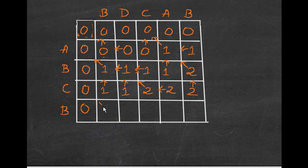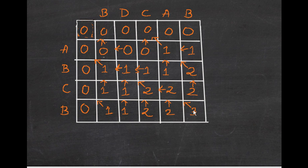B and B match — increment 0 by 1, we get 1. B and D do not match — take the maximum, 1. B and C do not match — take the maximum, 1 then 2. A and B do not match — take the maximum, 2. B and B match — increment the number at this cell by 1, we get 3. So the length of the longest common subsequence is found at this last cell.